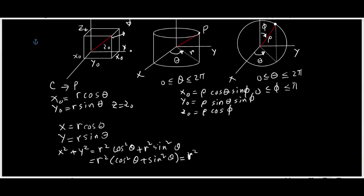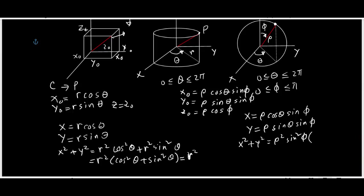For the Cartesian to spherical connection: x = ρ cosθ sinφ and y = ρ sinθ sinφ. Squaring and adding both sides gives x² + y² = ρ² sin²φ (cos²θ + sin²θ) = ρ² sin²φ. Since x² + y² = r², we get r = ρ sinφ, which is the connection between cylindrical and spherical coordinates.